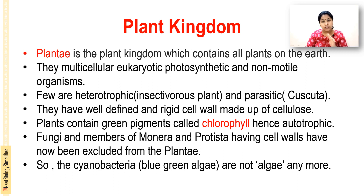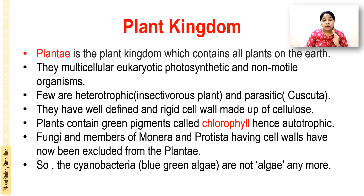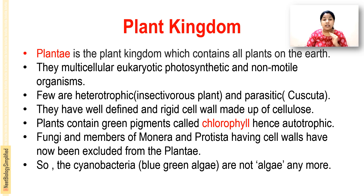Not only photosynthetic and eukaryotic forms, but also heterotrophic and parasitic forms can be seen in the case of Kingdom Plantae. They have a well-defined and rigid cell wall made up of cellulose, which gives shape to the cell.